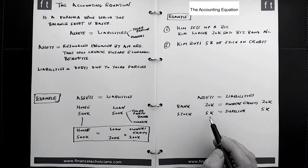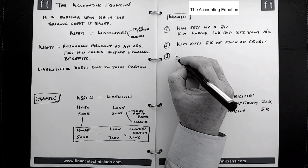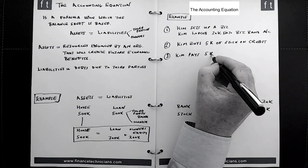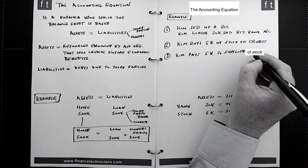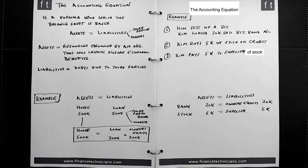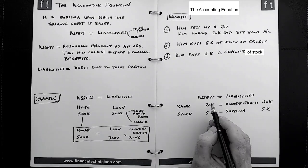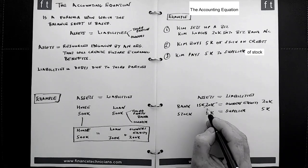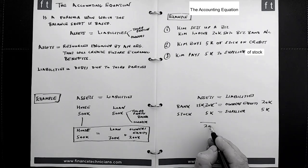Now let's look at another transaction here. Let's just say Kim pays 5k to supplier of stock. How's that going to impact here? Well, you think about it, it means that 5k is going to come out of the bank account. So now the bank account is going to drop to 15k, and now assets are going to be 15 plus 5 is 20k. So we have 20k now here.